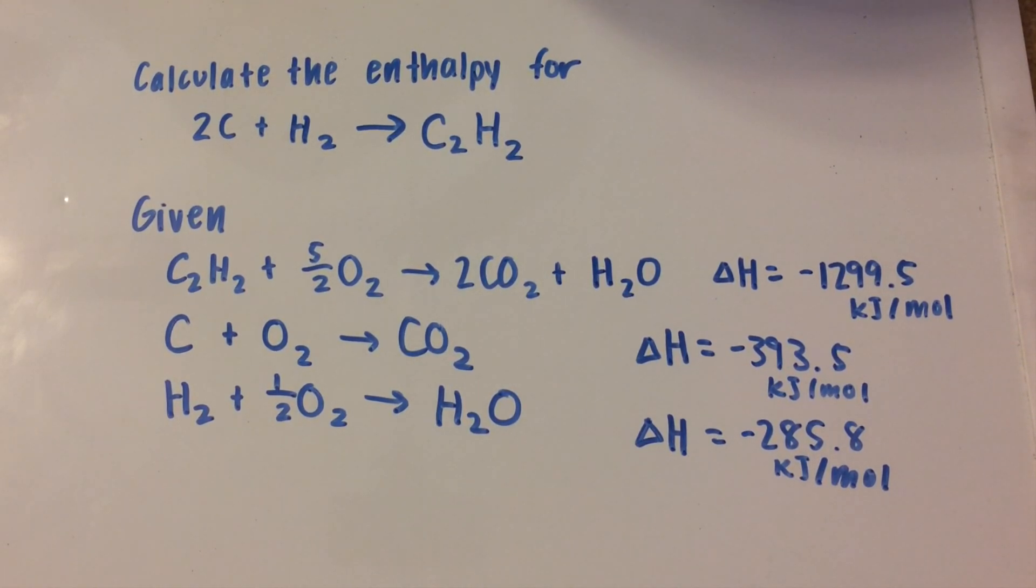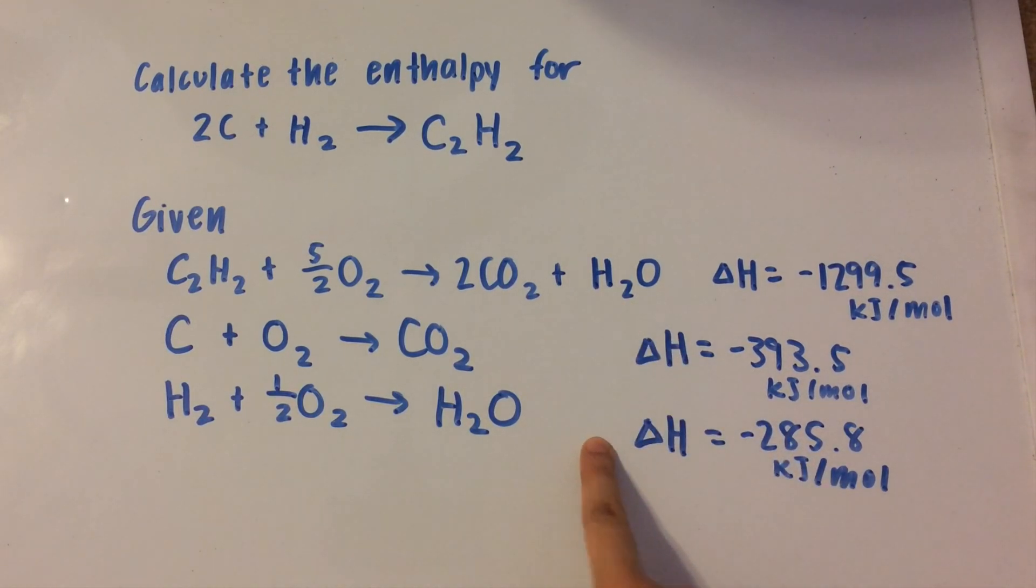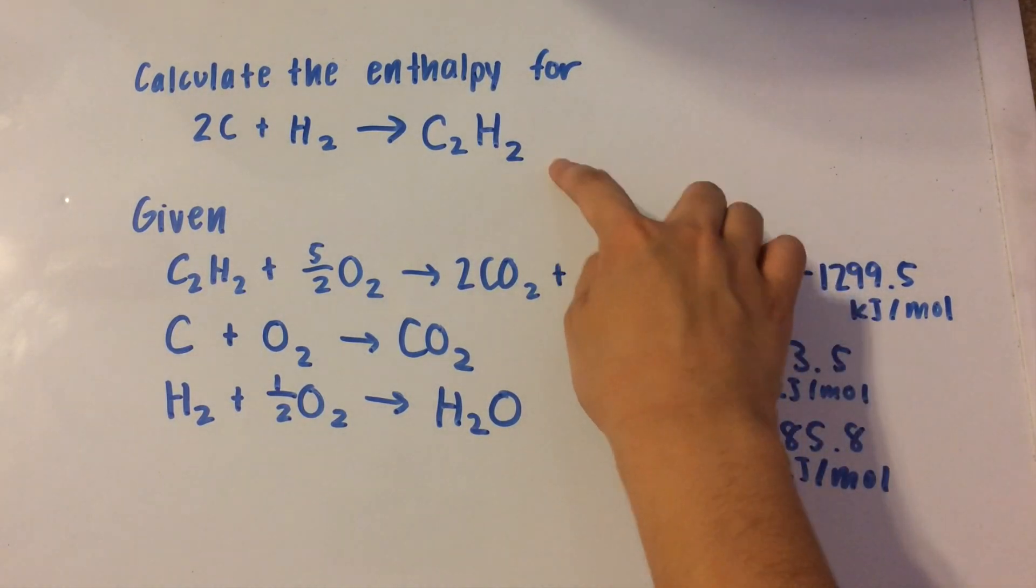So we need to calculate this enthalpy for this reaction, and we're given three sub-reactions to do that. To complete this, we need to use Hess's law, which basically states that the enthalpies of the constituent reactions add up to the enthalpy of the total reaction.